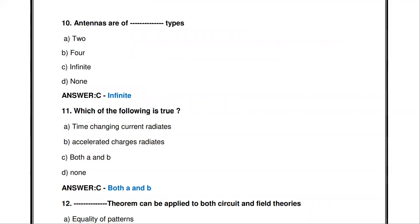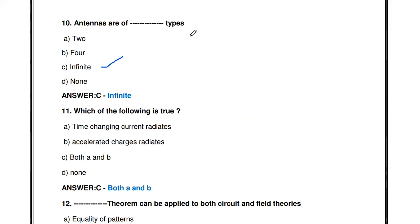The next question: antennas are of how many types — two, four, infinite, or none? The answer is infinite. There are an infinite number of antenna types available.